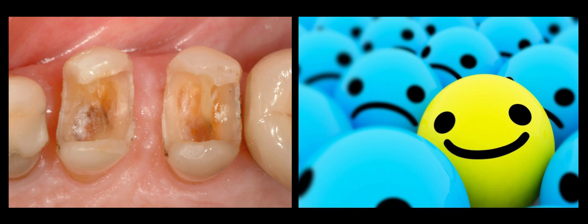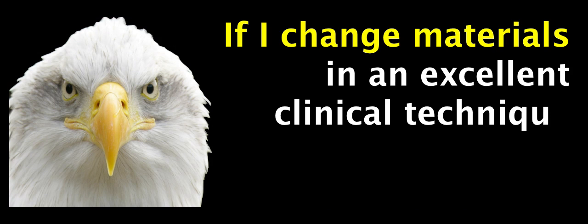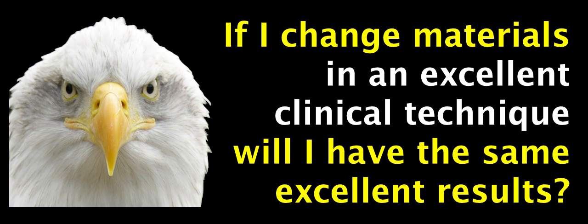My personal belief is that partial coverage crowns especially made out of gold is the best we can give to our patient, but unfortunately gold is not an aesthetic material and doesn't have high demand nowadays so it's being replaced by ceramic and composite. But the question remains: if I change only the materials, will I have the same excellent results? If we substitute the gold with ceramic or composite and the phosphate cement with a resin cement, will that guarantee the same excellent results?